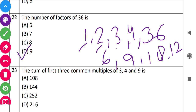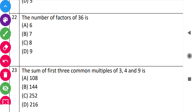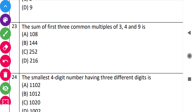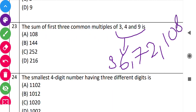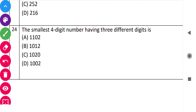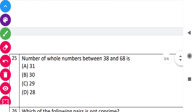Next: 'The sum of the first 3 common multiples of 3, 4, and 9.' First, find the LCM of 3, 4, and 9, which equals 36. The first three common multiples are 36, 72, and 108. Adding them: 36 plus 72 plus 108 equals 216. Next: 'The smallest 4-digit number having 3 different digits.' The answer is 1002, so option C is correct.